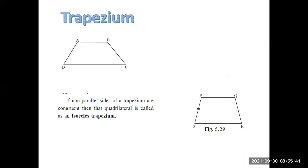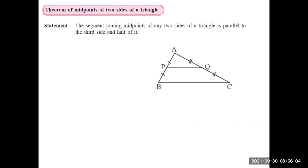Then we see the trapezium. A trapezium has only one pair of parallel sides. In the special case where the non-parallel sides are equal, we call it an isosceles trapezium. Since it's an isosceles trapezium, the base angles and the top angles will be equal.